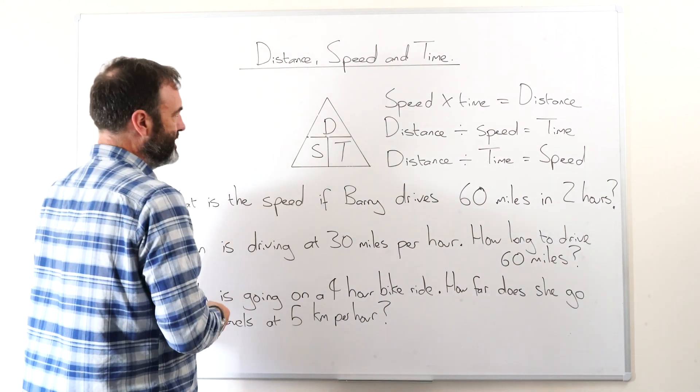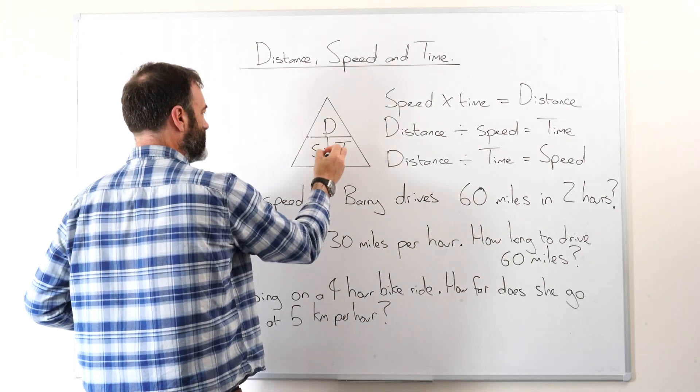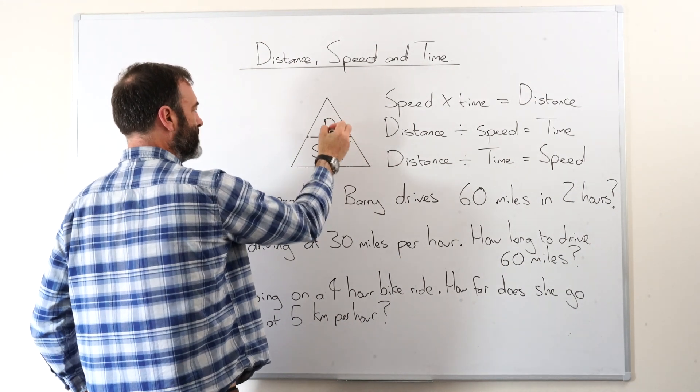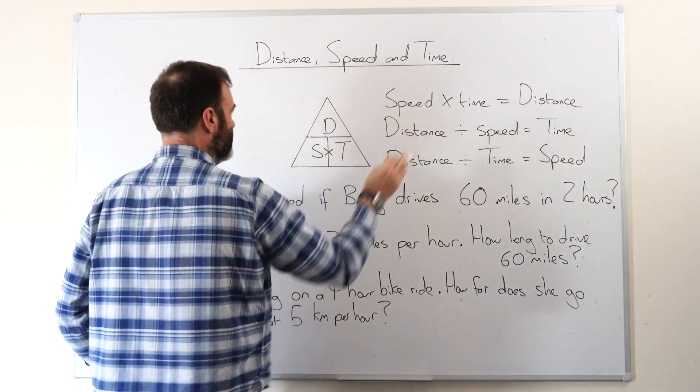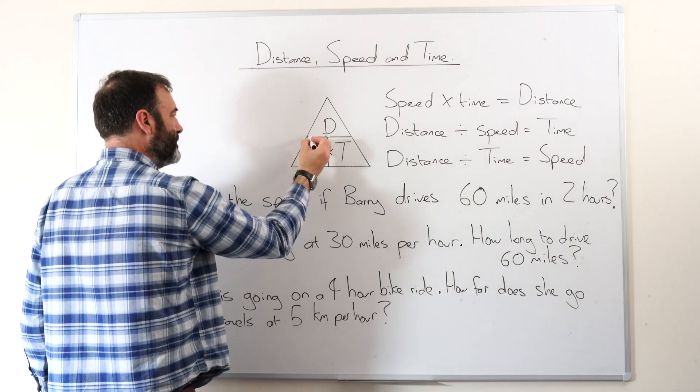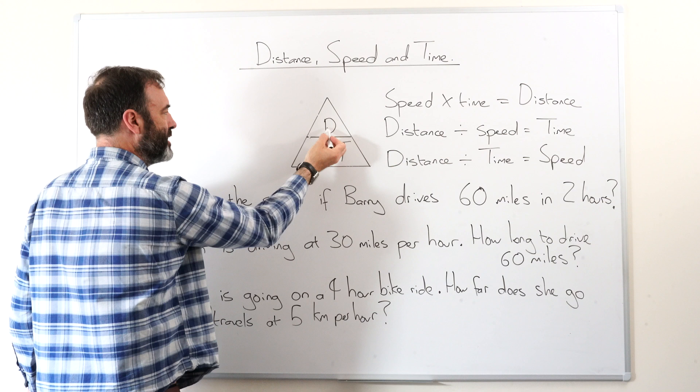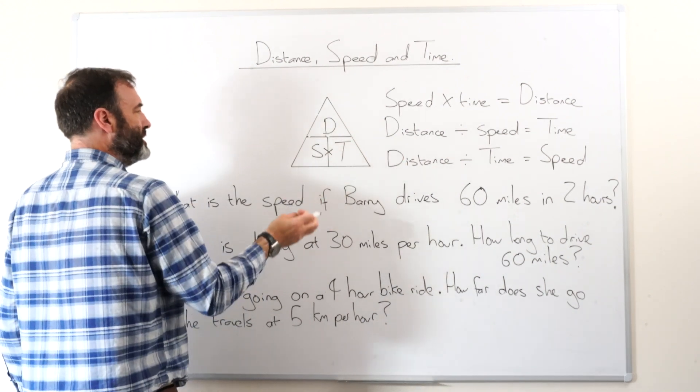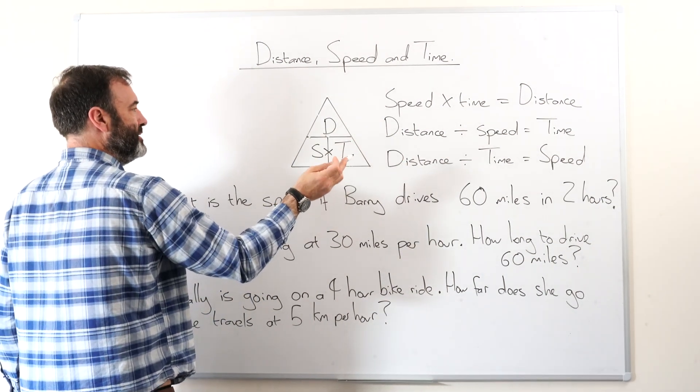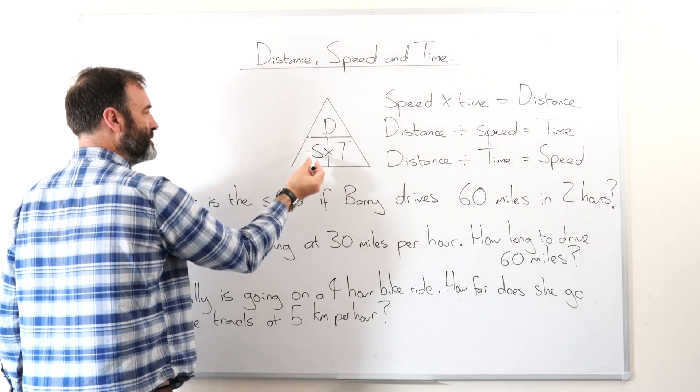And what this actually means is that the bottom two multiplied equals the top one. So speed times time equals distance. We can imagine this line being like the divide line. Distance divided by speed is time. And then distance divided by time is speed.